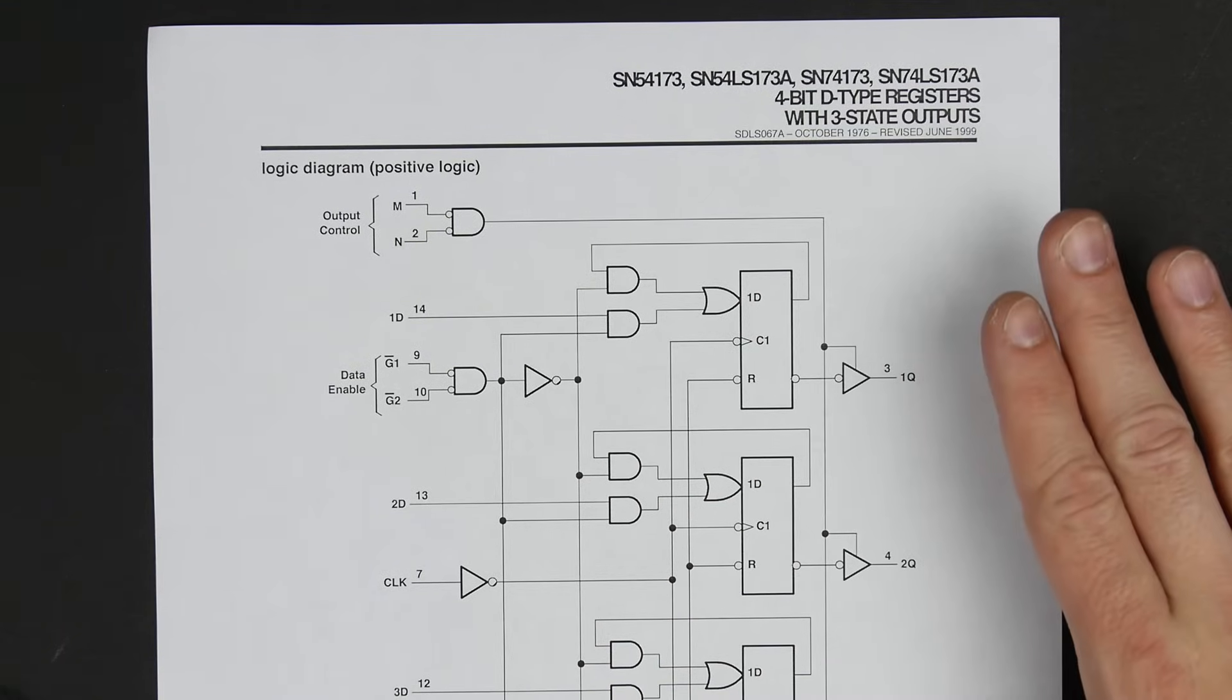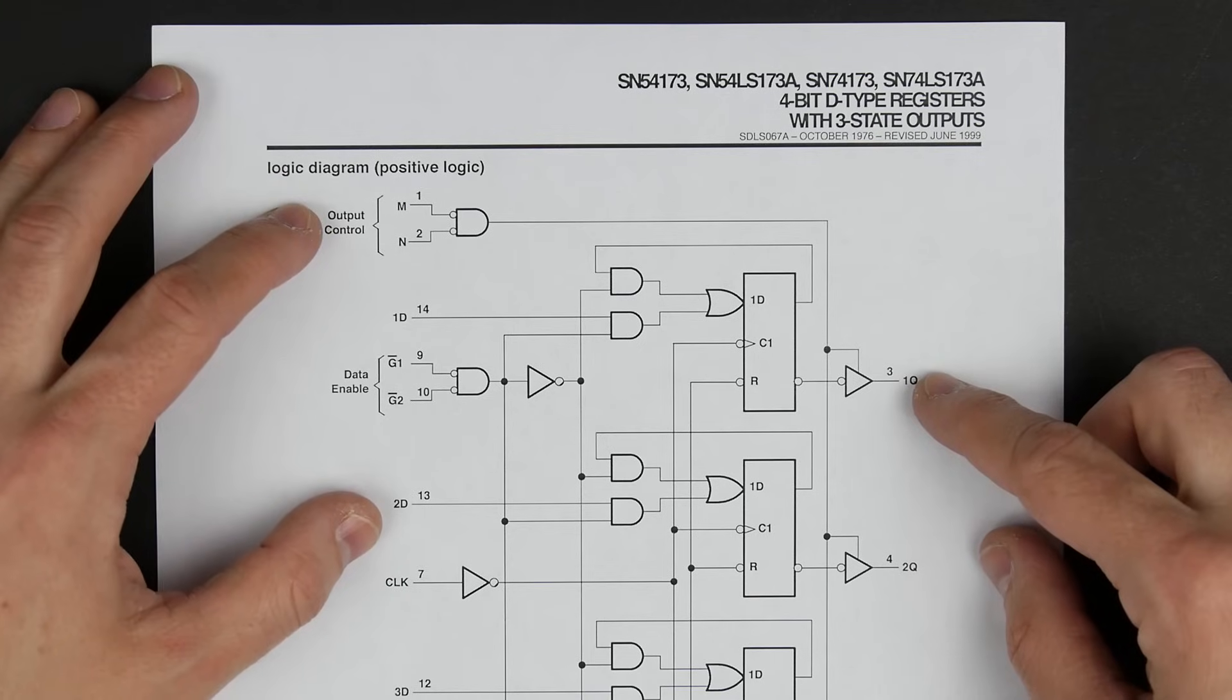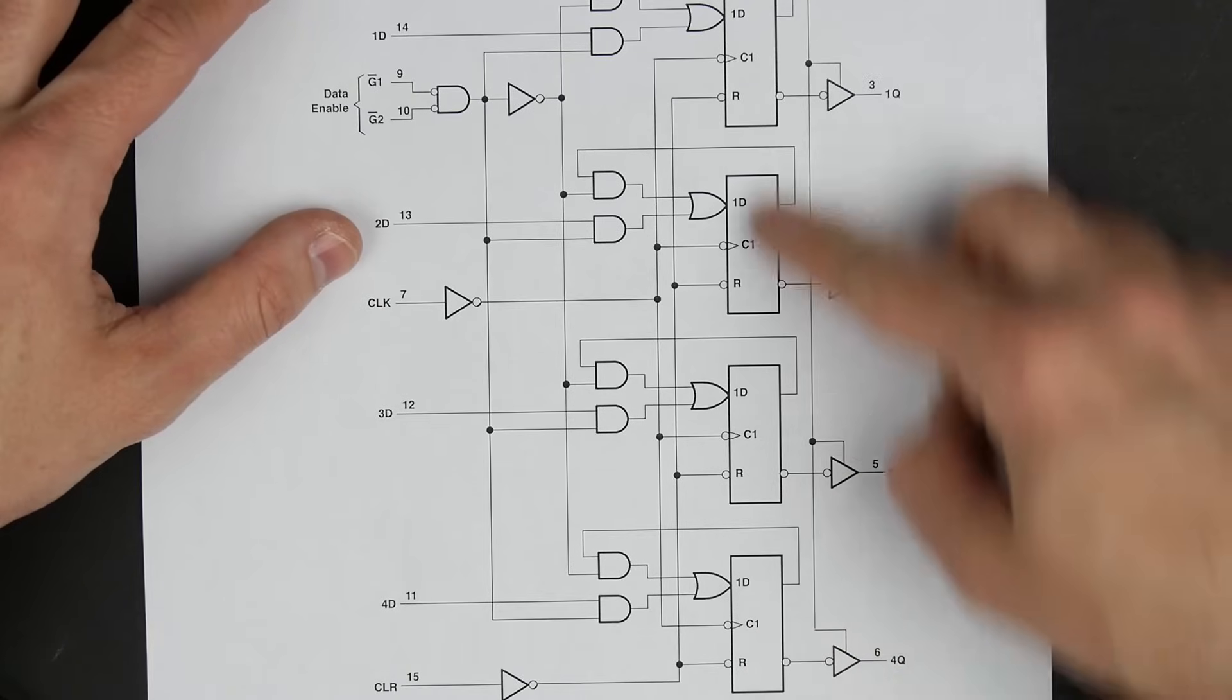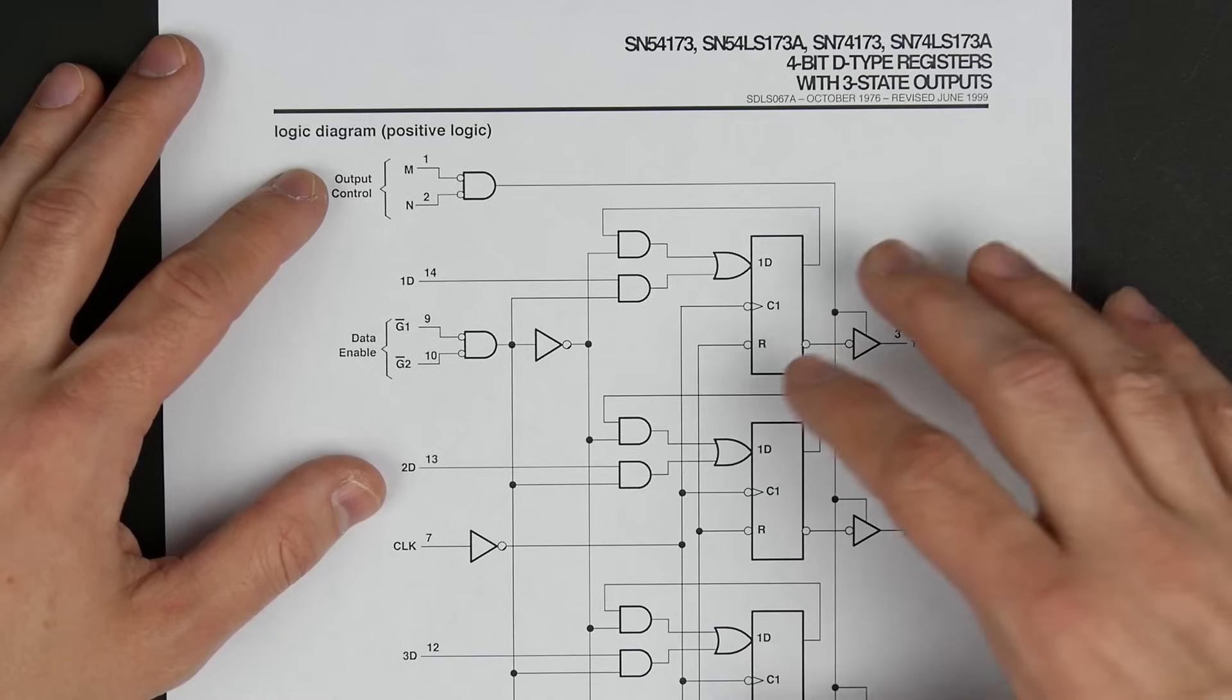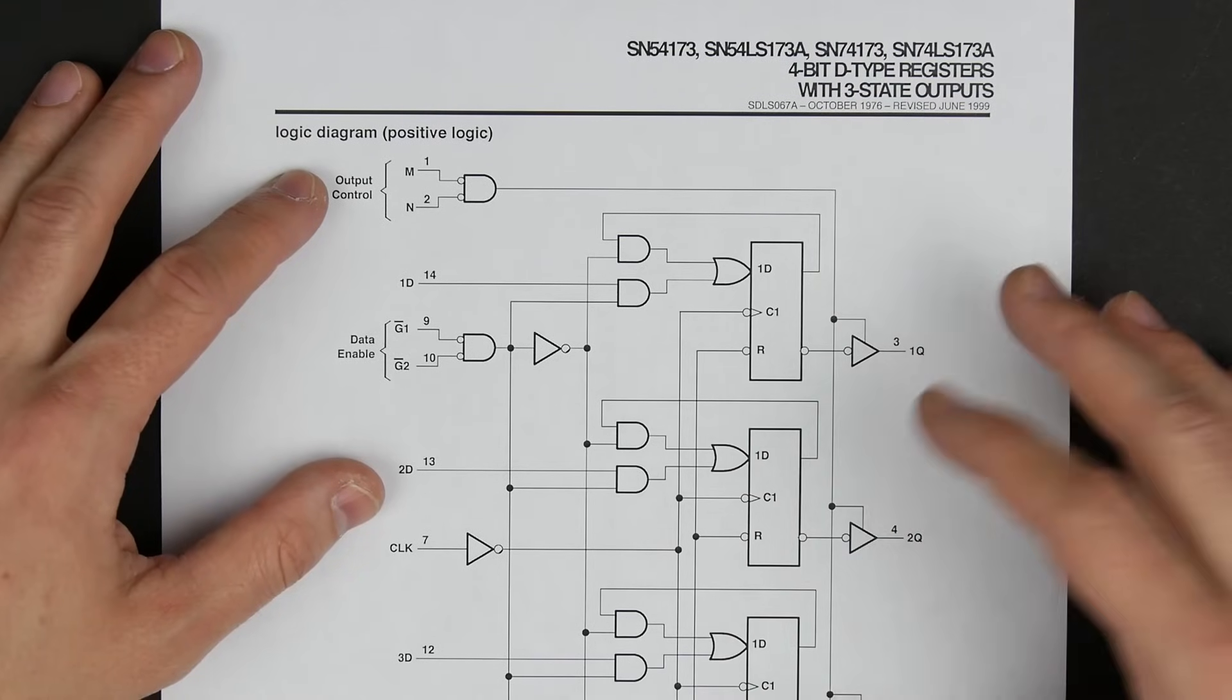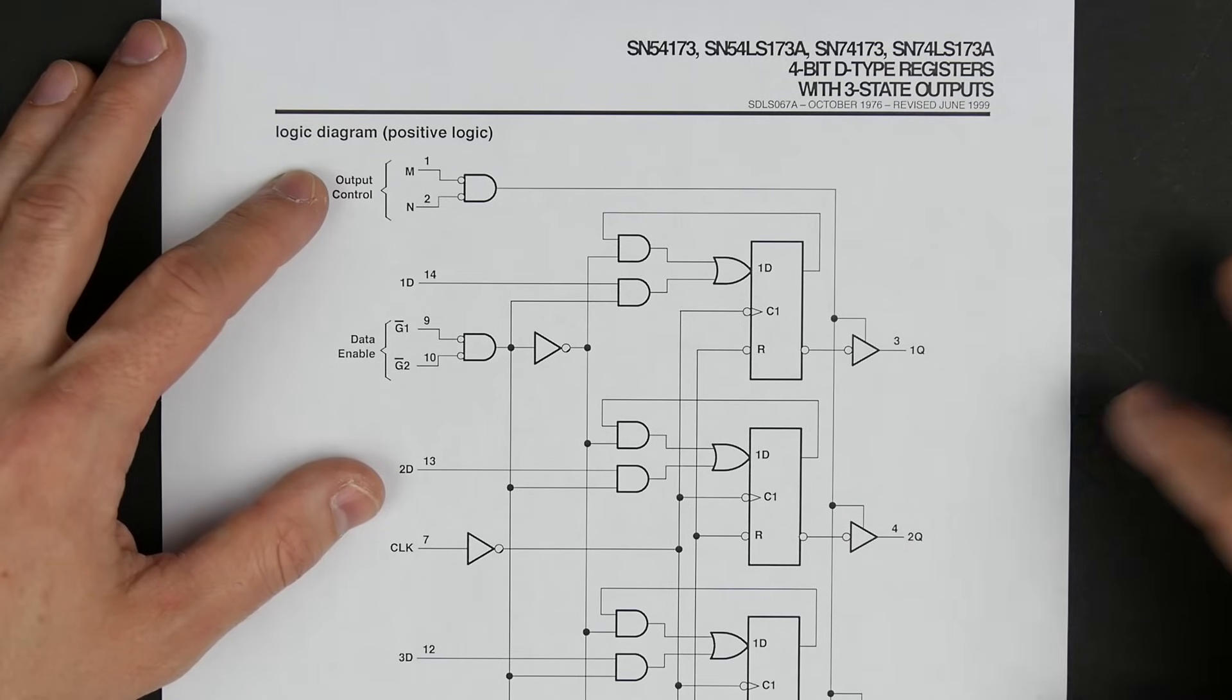One thing that I don't like about using just the 74LS173 is that it does have its own output control, which means that once it stores some series of bits here in these latches, or these flip-flops, you can't see what is in it. And I think it's pretty important for this computer, because this computer is designed as something that you can use to learn about how computers operate.